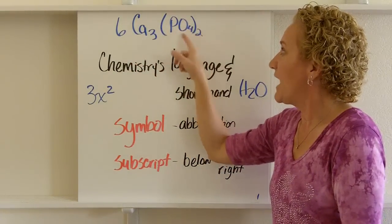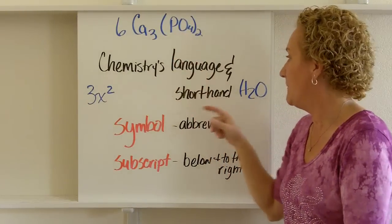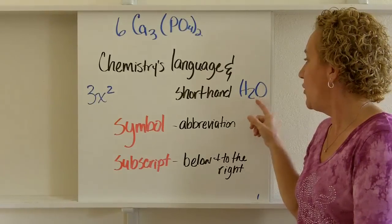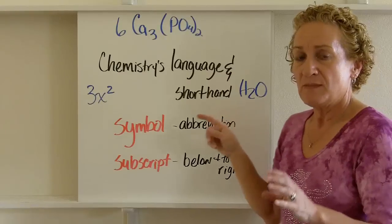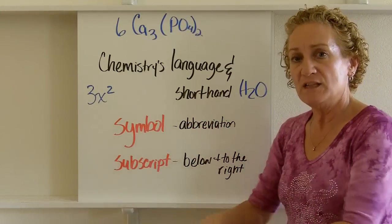This 2, however, acts on the whole thing in the parentheses. We're going to talk about that in just a minute. So when I have H2O, that tells you there's two hydrogens and one oxygen. And the prefix sub means below.